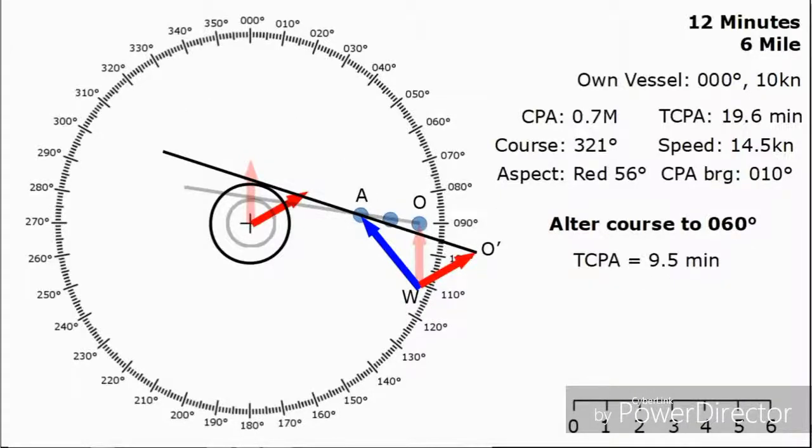Then all we want to do is measure the radius of our ring to work out the new closest point of approach. Overlaying our scale bar again, we see the CPA is now going to be 1.2 miles.